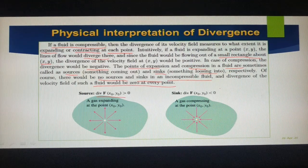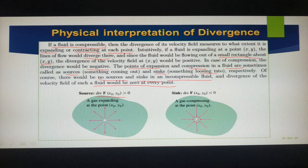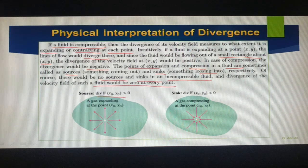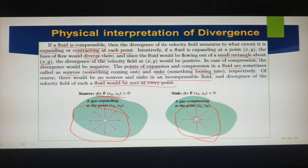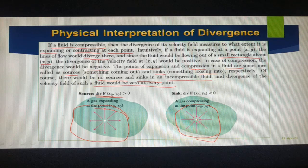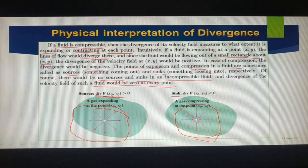For understanding, consider a very familiar example: open the tap over a sink. Water comes out from under the tap, falls down at a certain point, and expands. In that case the fluid is expanding, so the divergence is positive. When it goes near the hole, it shrinks. In that case we say it is compressing — something going into it — so we call it a sink. All these things are happening at one point.